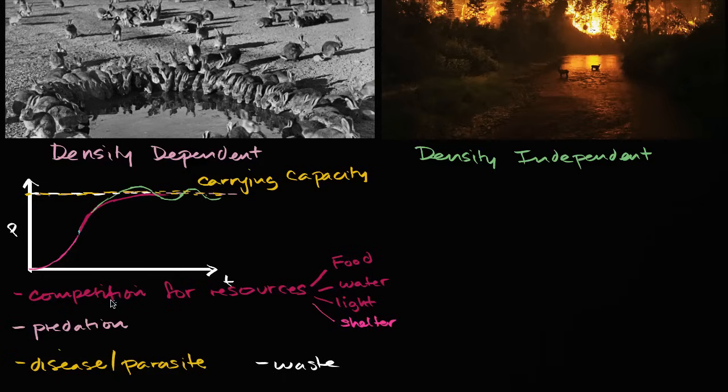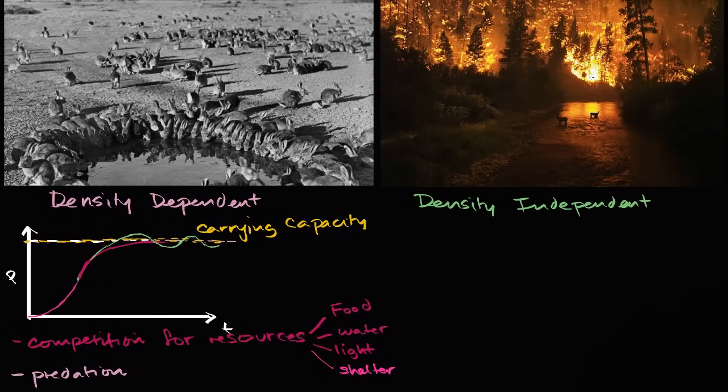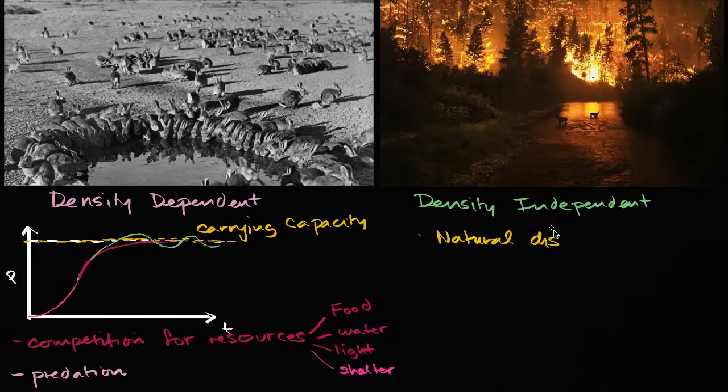And a lot of these, as we just talked about, you could think of them as biotic factors. They're related to other living things around. The density independent factors tend to be abiotic. They tend to not be related to living things. So the most common density independent factor is natural disasters. Natural disaster.